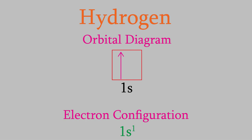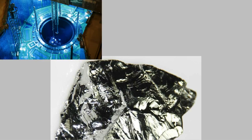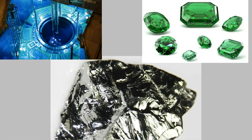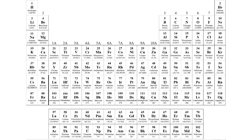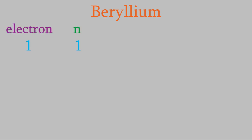Now let's try drawing an orbital diagram and an electron configuration for a larger atom. This time we'll try beryllium — an element important in nuclear reactors, superconductors, and the one that gives emeralds their beautiful green color. As you can see from the periodic table, beryllium has four electrons. As we saw with hydrogen, electrons want to have the lowest possible energy, so the first electron will go in the n equals 1 shell, in an l equals zero orbital — so it's in a 1s orbital.